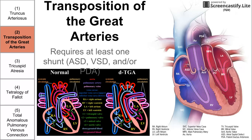Next we have two, which is transposition of the great arteries. This one's called two because we have two great arteries, and they're both switched. The great arteries are the aorta and the pulmonary artery. The aorta is usually attached to the left ventricle, and the pulmonary artery is usually attached to the right ventricle. In this case they're switched, and this is a very interesting disease because it results in two separate circulations of blood.